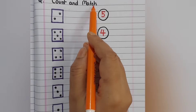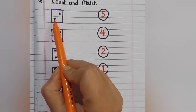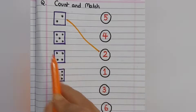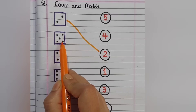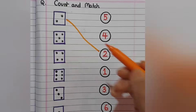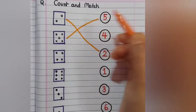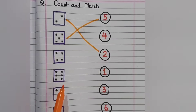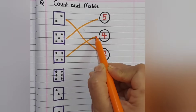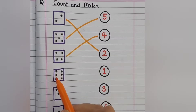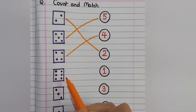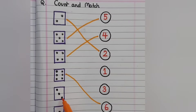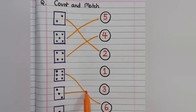This worksheet: count and match with the number. Here one, two, two, two, two, two — match with two. One, two, three, four, five — there are five, match with five. One, two, three, four — four points, match with four. One, two, three, four, five, six — match with six. One, two, three — match with three, and one — match with one.